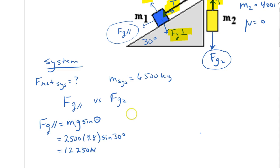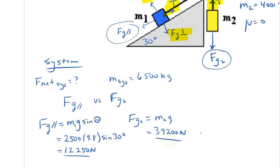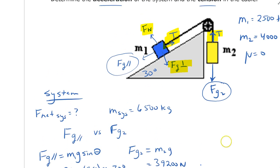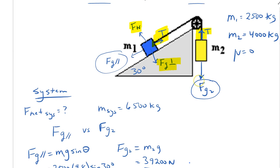Over here, Fg2 equals M2 times g: 4,000 times 9.8 gives us 39,200 newtons. Fg2 is the winner — it's the larger force. So the acceleration direction will be: Fg2's side is positive and Fg parallel's side is negative.